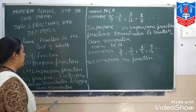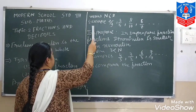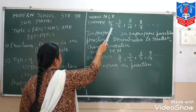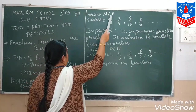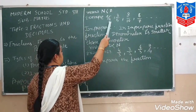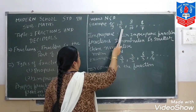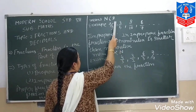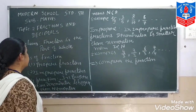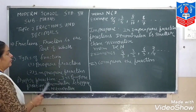It means the numerator is small and denominator is bigger. Here is an example — the numerator is smaller than the denominator. For example, 7 by 9, 3 by 5. See, 3 is the numerator and it is small, and the denominator is big. So in any fraction, if the denominator is big and numerator is small, it is a proper fraction.